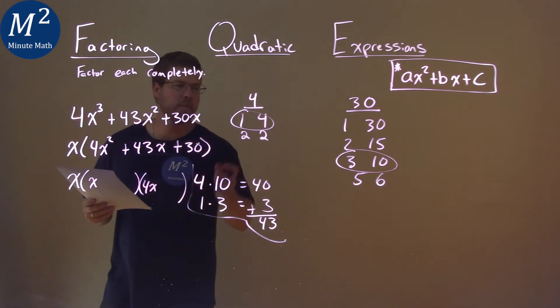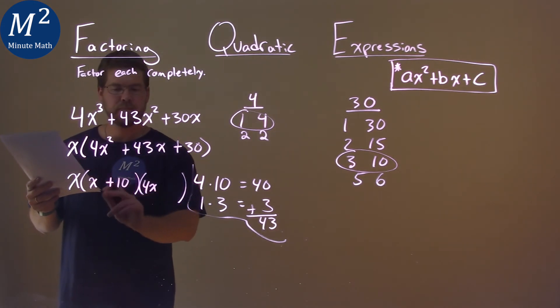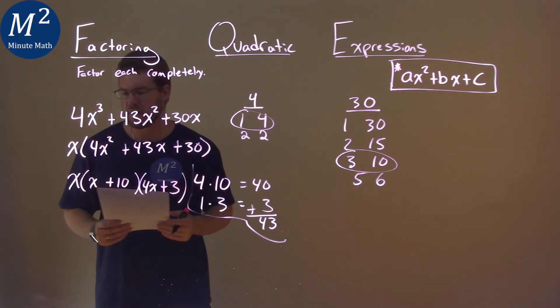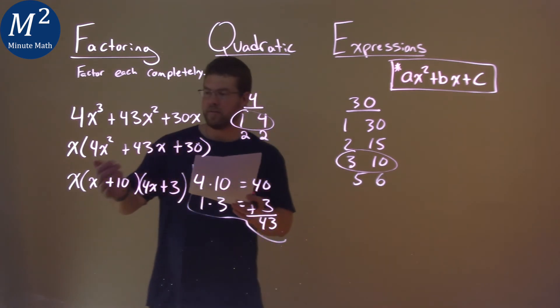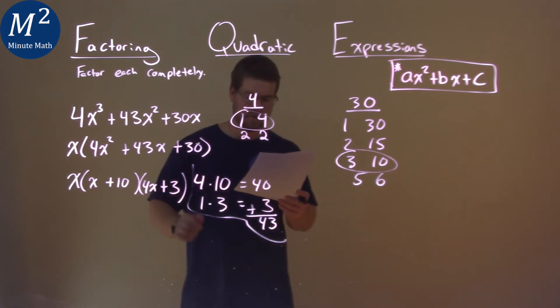Well, we said 4 had to be multiplied by the 10. So to do that, we have to put the 10 on this side. The 1 gets multiplied by a 3, and we put the 3 on that side. And now we actually have our answer in factored form. So here's our final answer: x times x plus 10 times 4x plus 3.